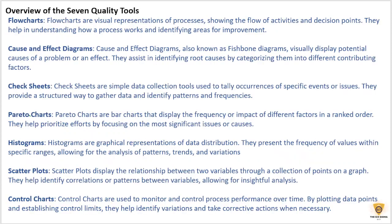Now let's talk about the seven quality tools and take an overview of each. The first one is the flowchart. A flowchart is a visual representation of processes showing the flow of activities and decision points.